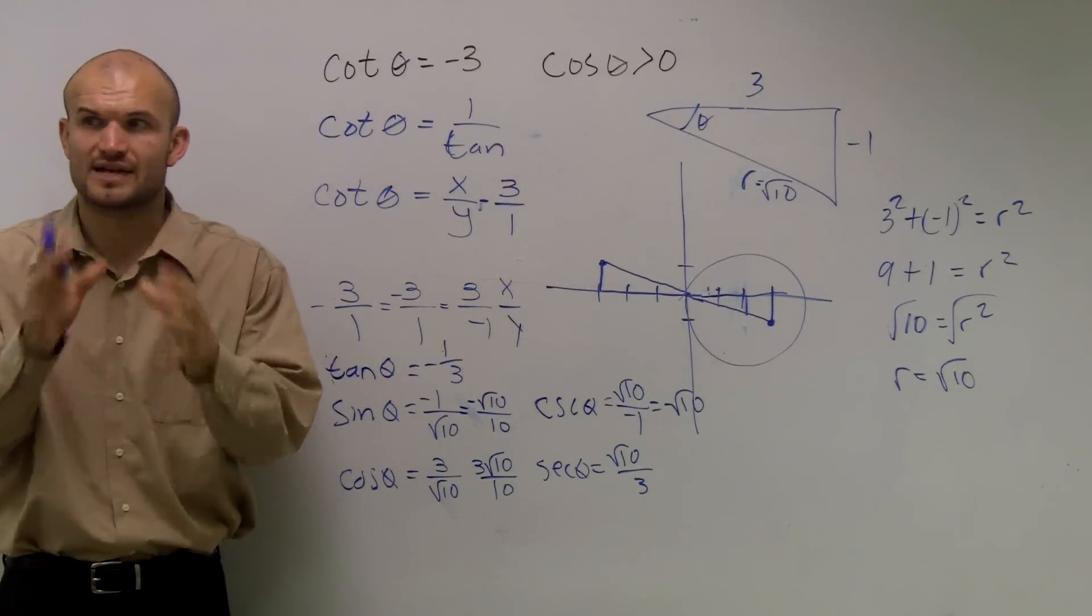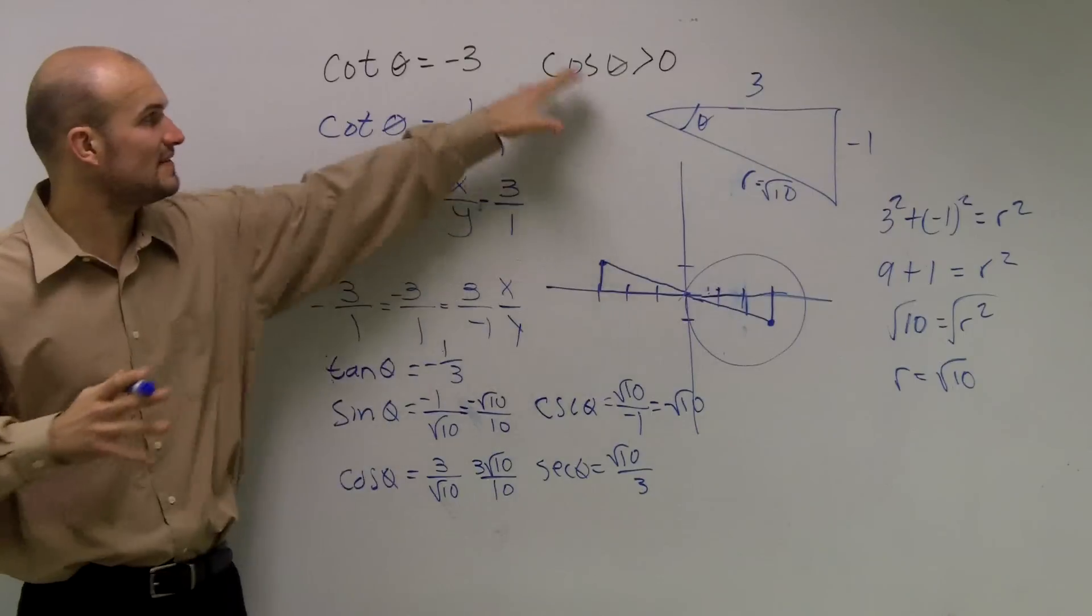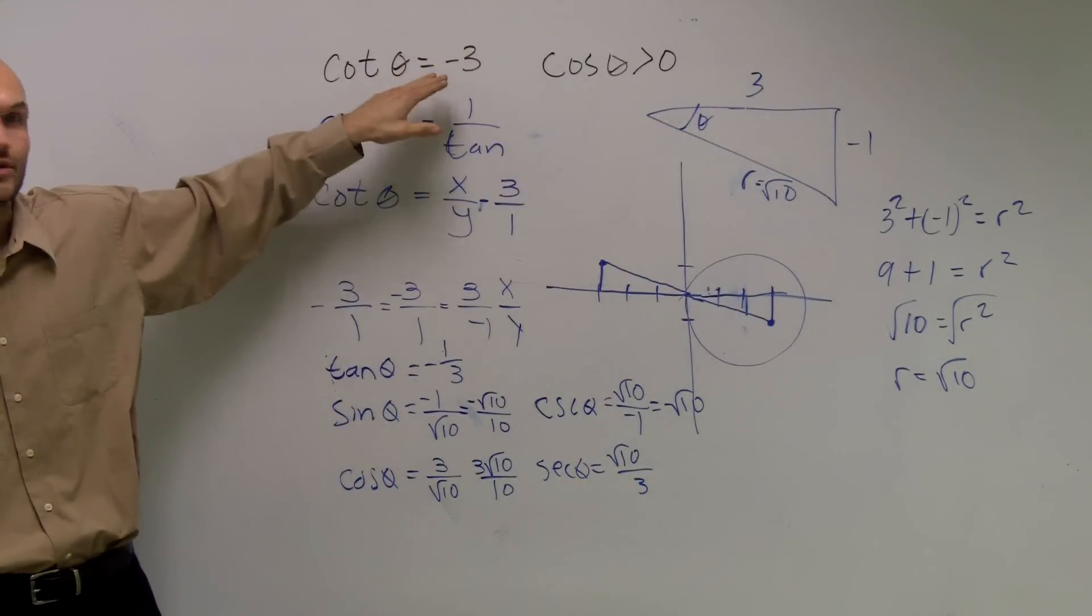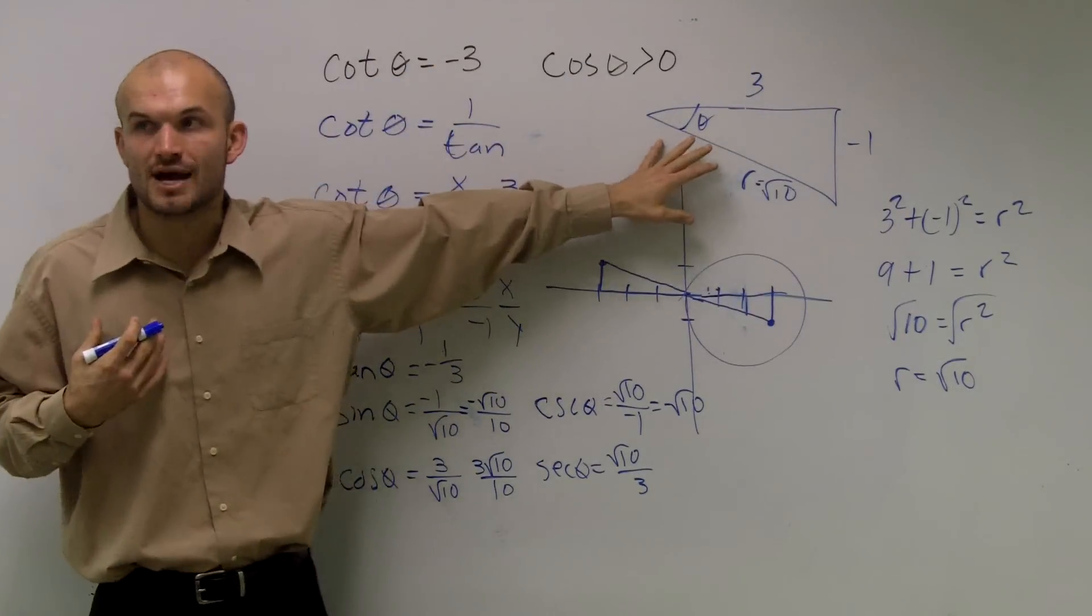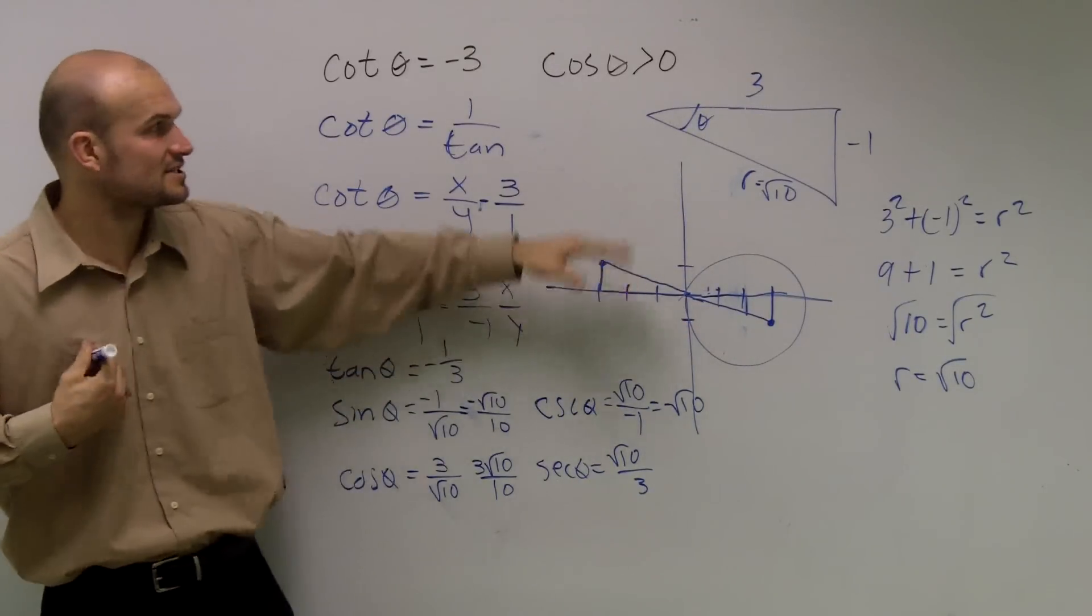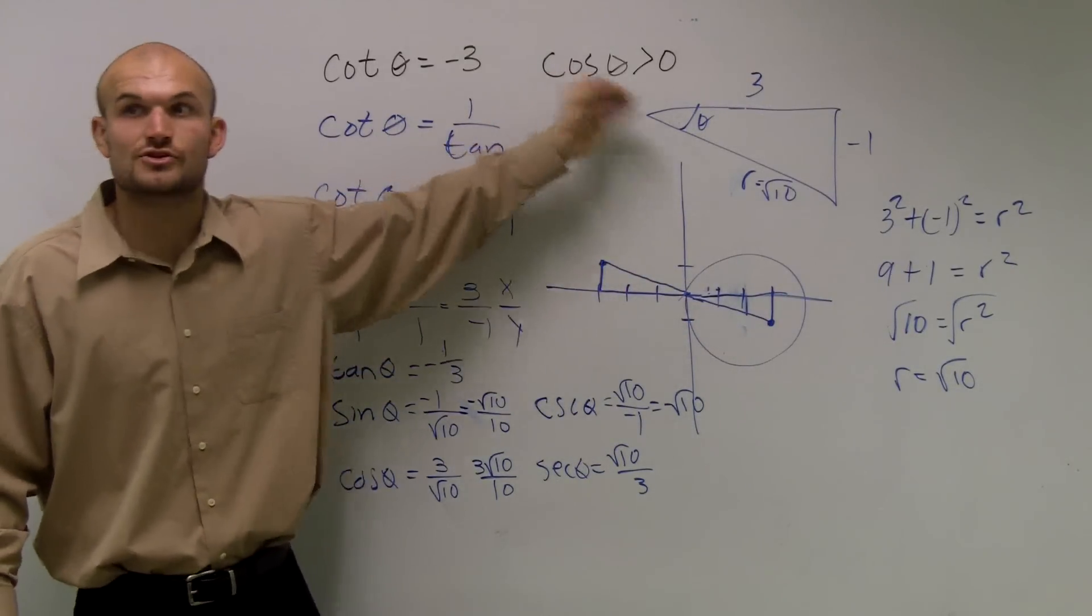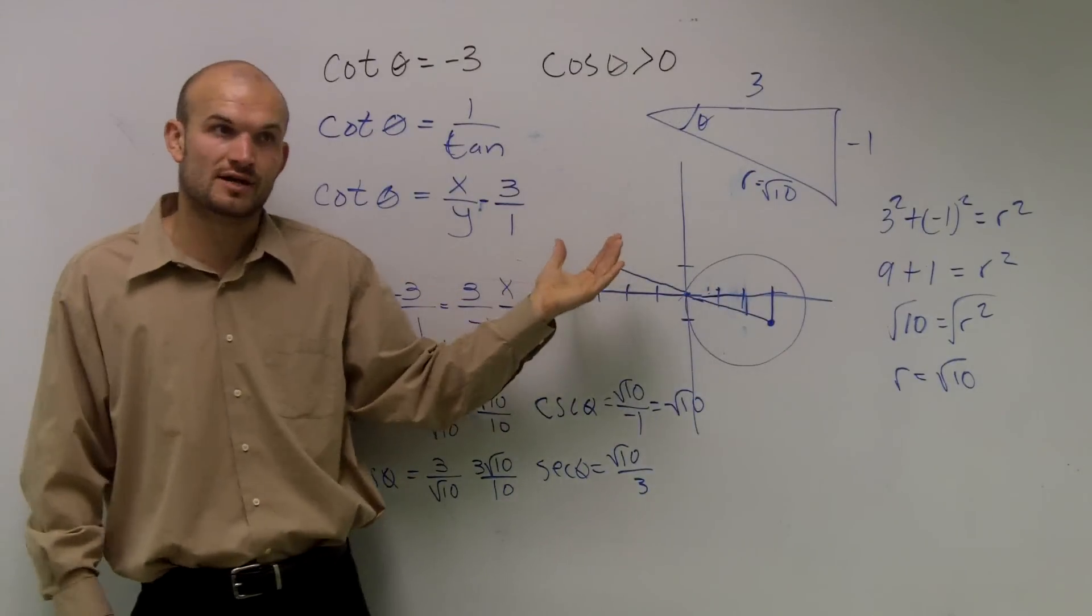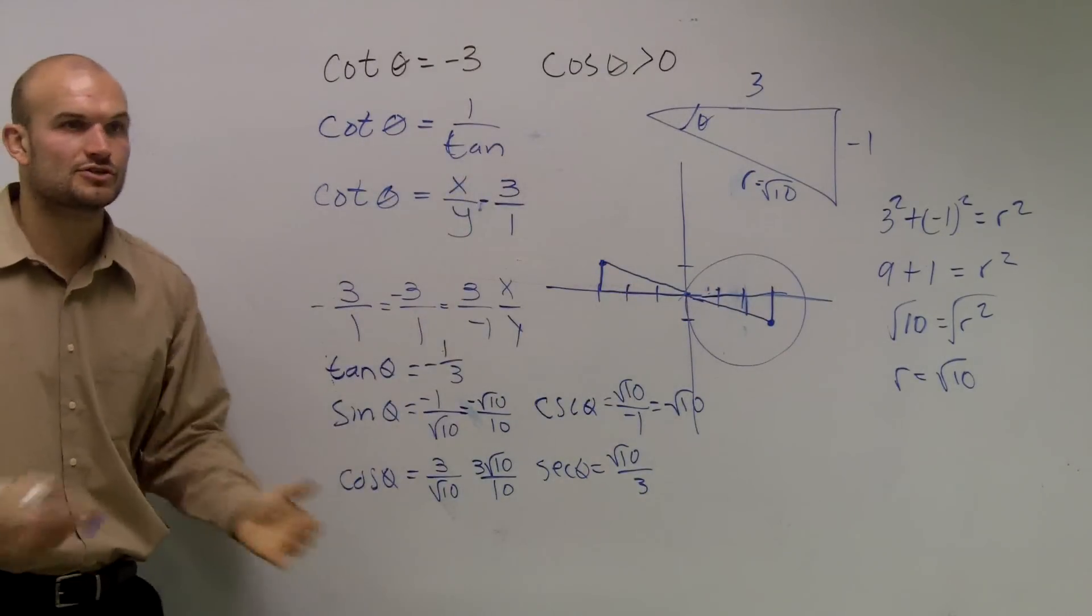So the main important thing that you guys need to make sure you understand is that they give you something and you know it's not on the unit circle. You're going to have to create a right triangle so you can determine what the hypotenuse is. Then, once you know what the hypotenuse is, make sure you use the constraints so you know which quadrant you're creating that triangle in. And then, just evaluate using your trig identities.